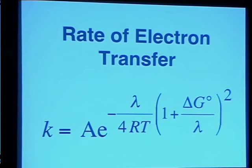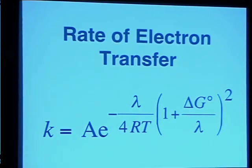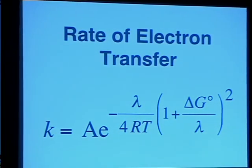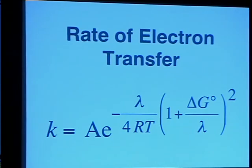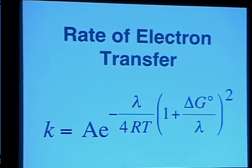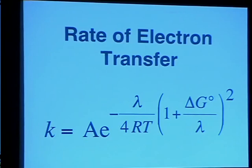This equation made a number of predictions that we wrote about in 1960. Then during the course of the next 25 or so years, those predictions were tested by experiment and in general they were confirmed. This equation itself is something that one can use to treat various kinds of systems and make predictions about those different systems.